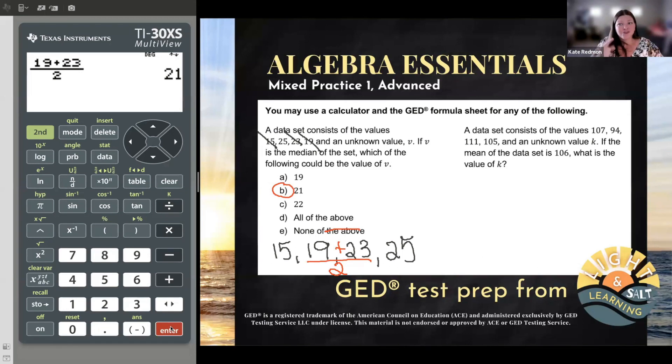It should be in your ordered list. Let's say that again. V is a number that's part of this set. It better be in your numbered list. Now you say, Kate, I don't know what V is. How am I supposed to put V in my ordered list? Well, no, you don't know what V is, but you know where V is.